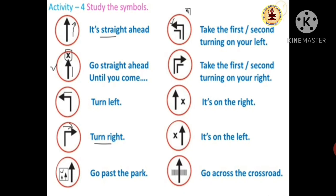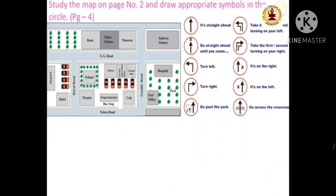Take the first or second turning on your left — if the right side comes first, then take the second turning; otherwise take the first turning. Go across the crossroad. Now let's study the map — a map with traffic signals and symbols. This is a link in the textbook.